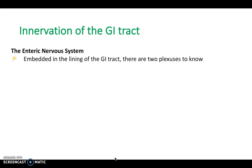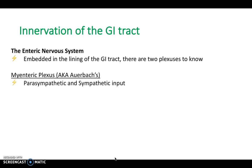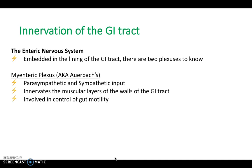The enteric nervous system is embedded within the lining of the GI tract — the mucosa, submucosa, and muscular layers. There are two plexuses to know. The myenteric plexus, also called Auerbach's plexus, has parasympathetic and sympathetic input. It innervates the muscular layers of the walls of the GI tract and is involved in control of gut motility.